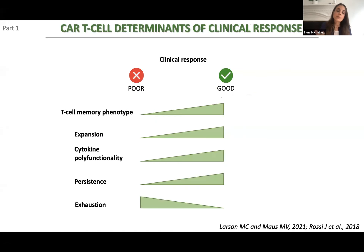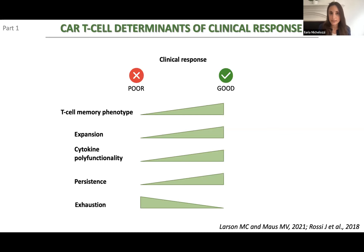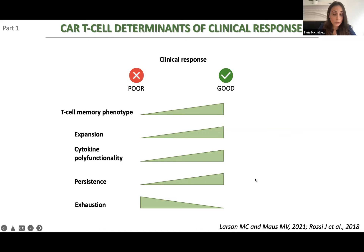Some of these features are of clinical relevance. Successful CAR T cell therapies have been associated with a high percentage of T cell memory — immature T cells — and highly proliferative CAR T cells. It is also important to test cytokine polyfunctionality, which is an emerging feature associated with good clinical response. Good clinical response has also been linked with long persistence of CAR T cells and the absence of exhaustion markers.